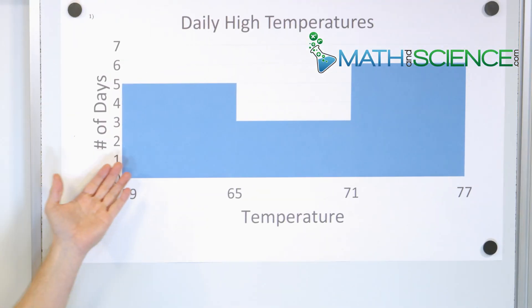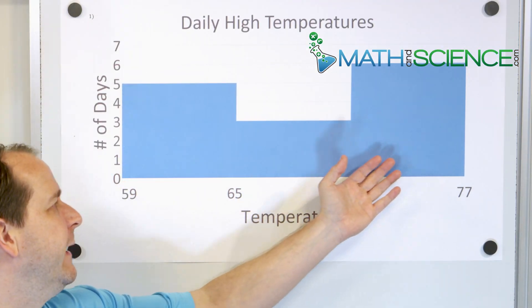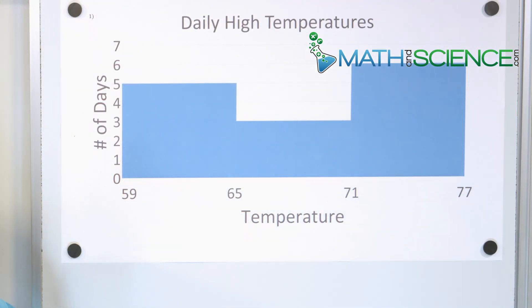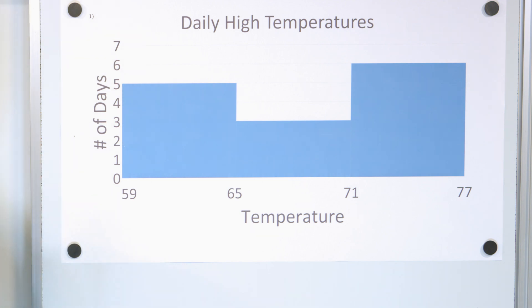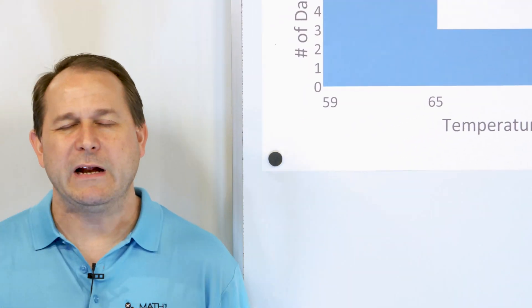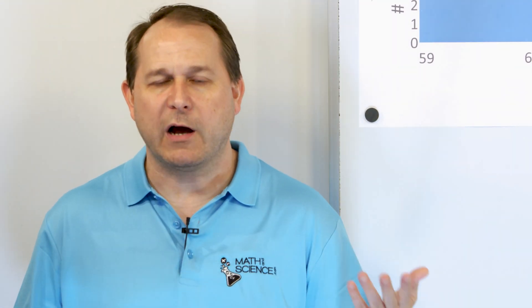Here's an example of a histogram. A histogram is essentially a bar chart. So if you have an idea of what a bar chart looks like — the vertical bars that go up — that's basically what a histogram is. There are a couple of differences, but ultimately it looks just like a bar chart with a couple of little differences.